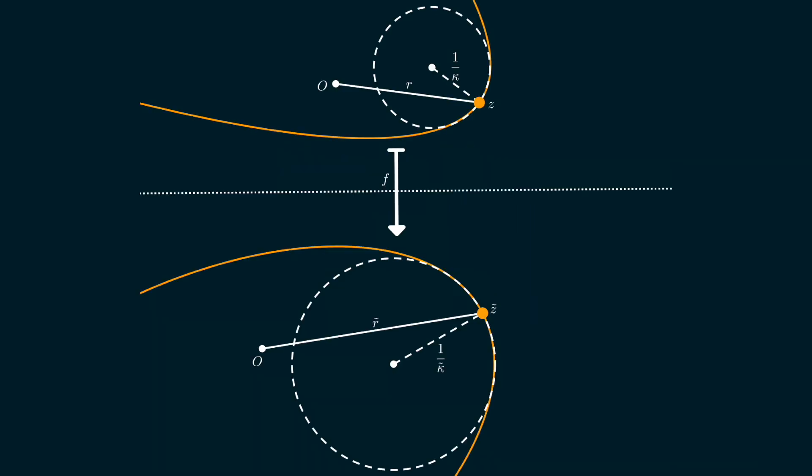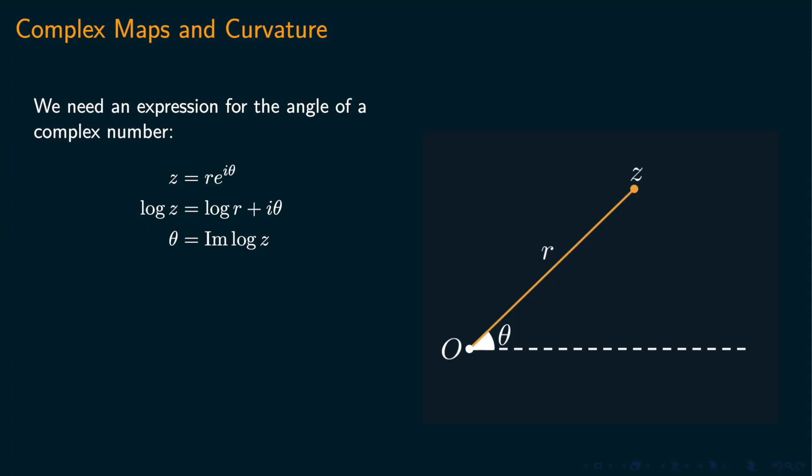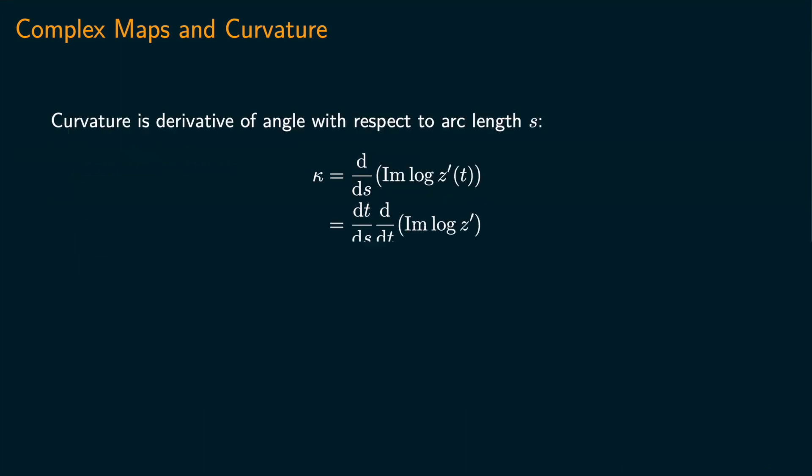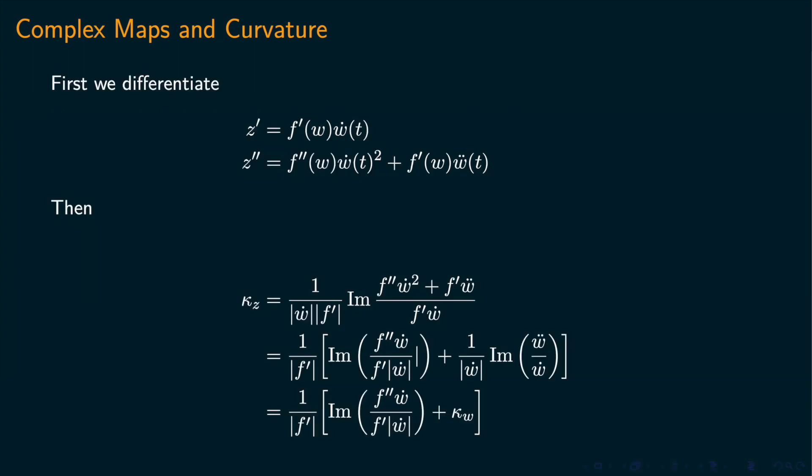We'll also need to know how the curvature of an orbit changes when we apply a function to the complex plane. The easiest way to get this result is a little computation. First we need an expression for the argument of a complex number that we can manipulate. Then we compute the rate of change with arc length. Then we plug in z equals f of w and use the chain rule.